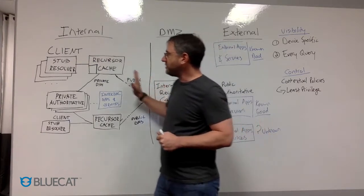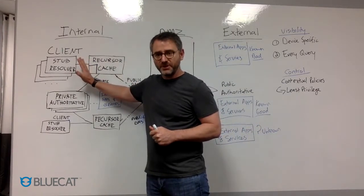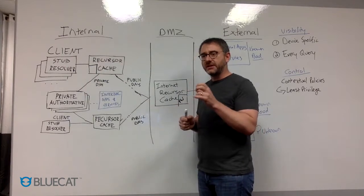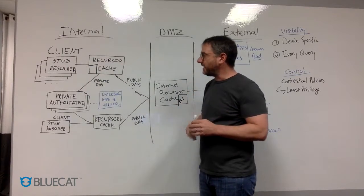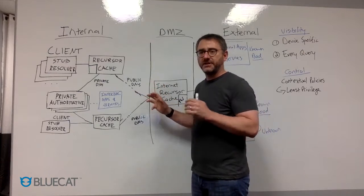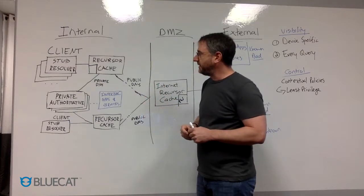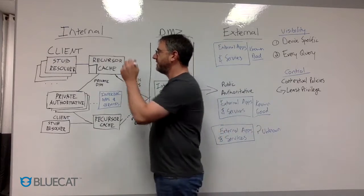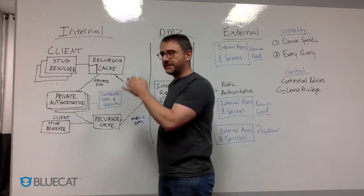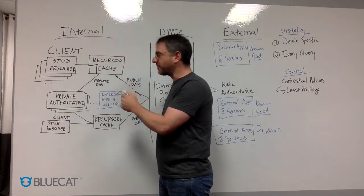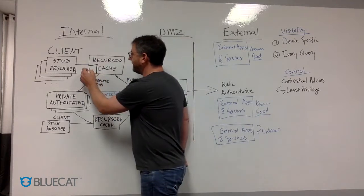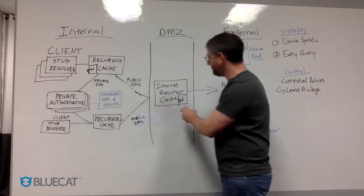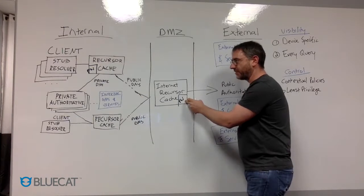Secondly, if we can drive that capability towards the edge, now we can create real, rich, contextual policies that allow for least-privileged type access to DNS. So at BlueCat, we're focused on securing the enterprise by providing device-facing DNS firewalls, as opposed to internet-facing DNS firewalls.